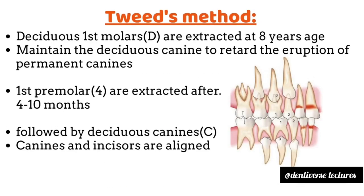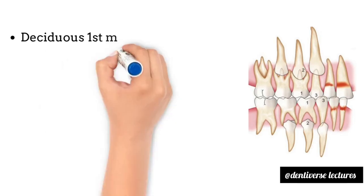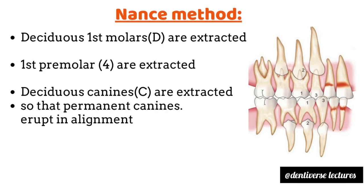In Tweed's method, the second step is extraction of the first premolar after four to ten months, followed by extraction of the deciduous canine, so that canine and incisor are aligned properly. In Nance's method, the first step is extraction of deciduous first molars; the second step is to extract first premolars, followed by extraction of deciduous canines, so that permanent canines erupt in alignment.